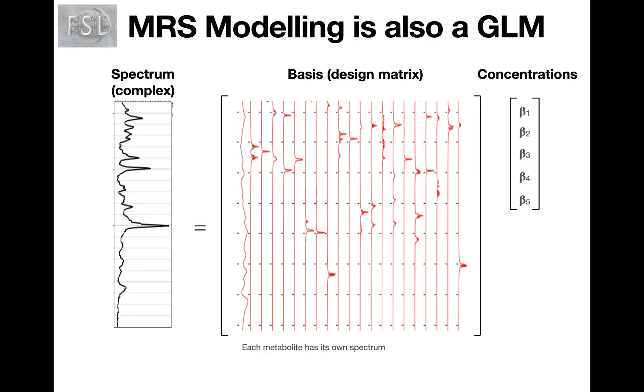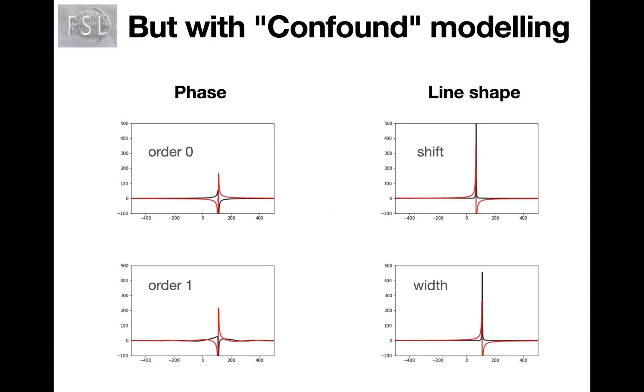With MRS the situation is very similar. We have a complex spectrum on the left hand side and we try to model that using a linear combination of spectra, each representing a separate metabolite. And our regression coefficients are the concentrations for each metabolite. We also have confounds that we need to model in this data. For example, confounds related to the line shape in terms of frequency shifts or line width. And we also want to model phase, in general zero and first order phase.